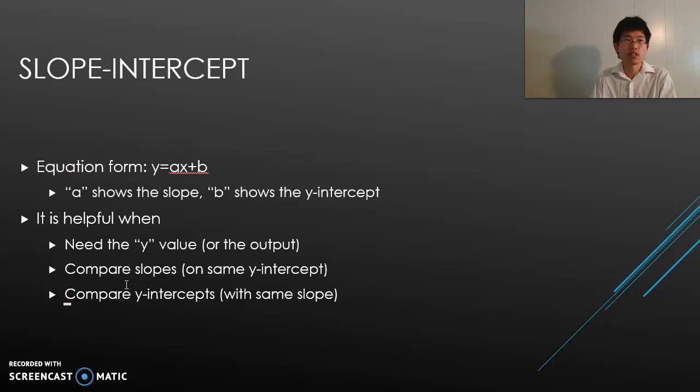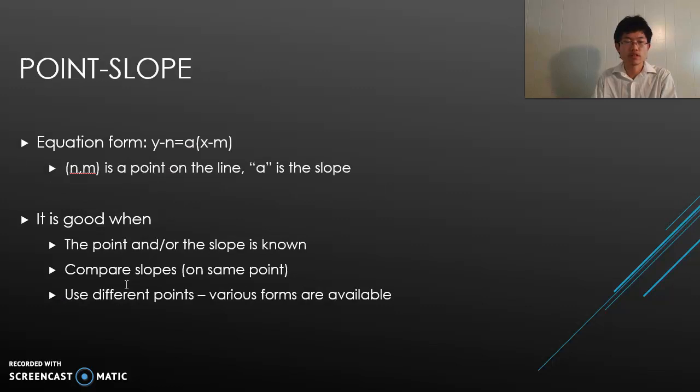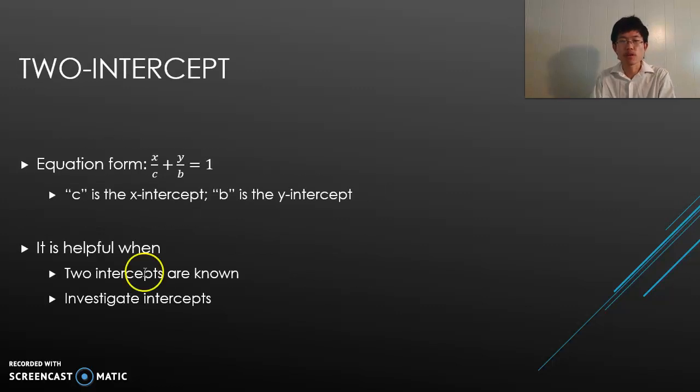The standard, point-slope, and slope-intercept forms are often seen or taught in the classroom. There is one more that I saw and would like to share. It's called the two-intercept equation form. It's like this: x over c plus y over b equals 1. c is the x-intercept and b is the y-intercept. If you know the two intercepts, you can do it this way. Investigating the intercepts might be something the class can do in the classroom.